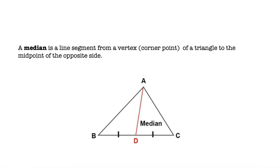What is a median? A median is a line segment from a vertex, which is the corner point of a triangle, to the midpoint of the opposite side. Here we see the median that goes from the midpoint of segment BC to the opposite vertex A.